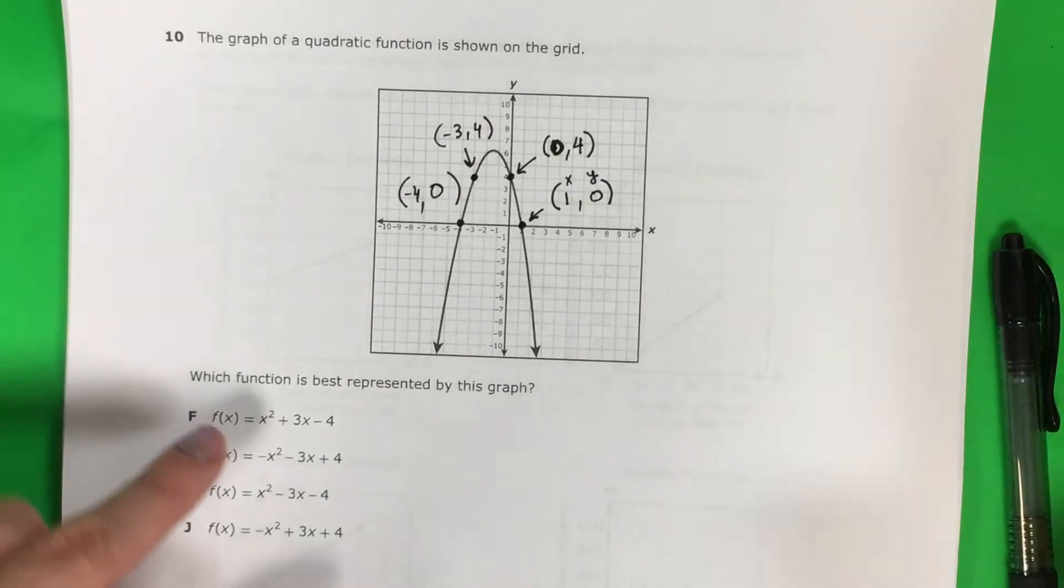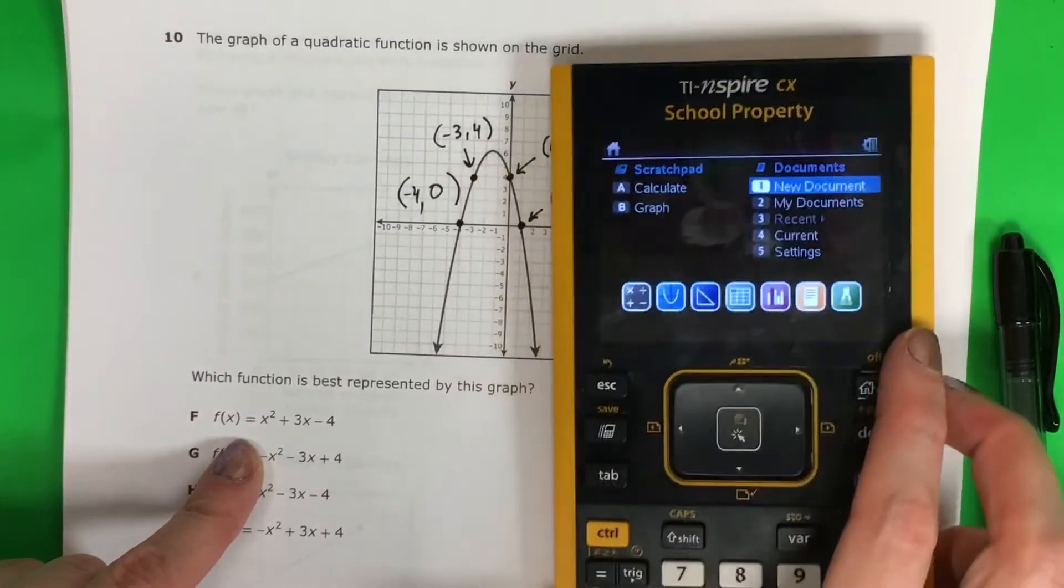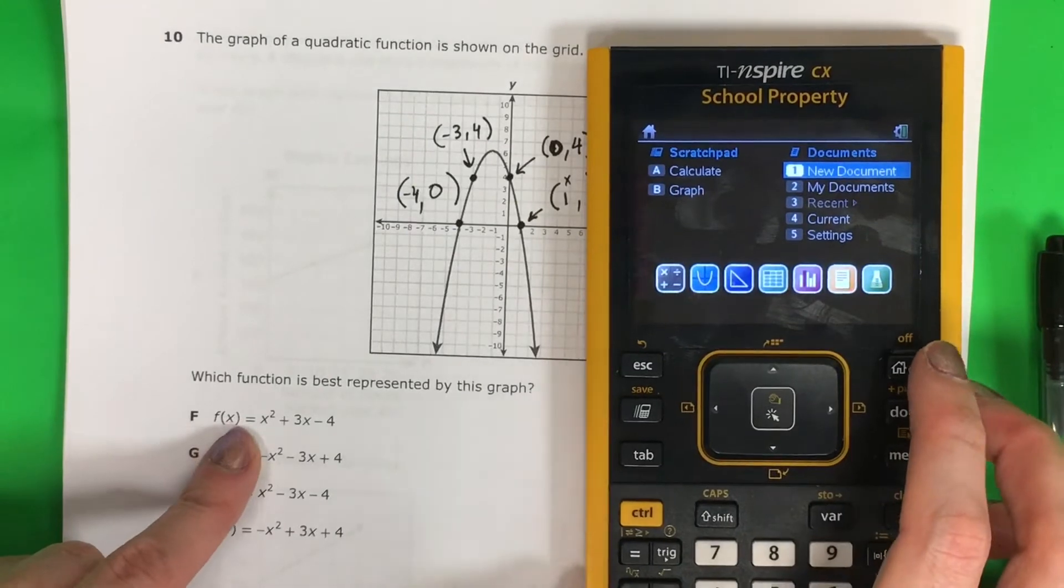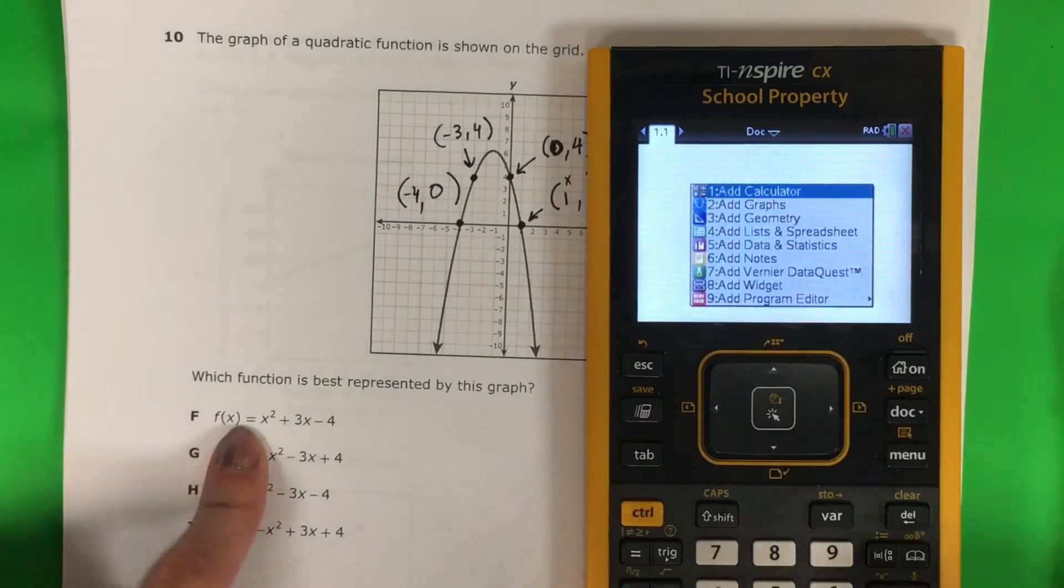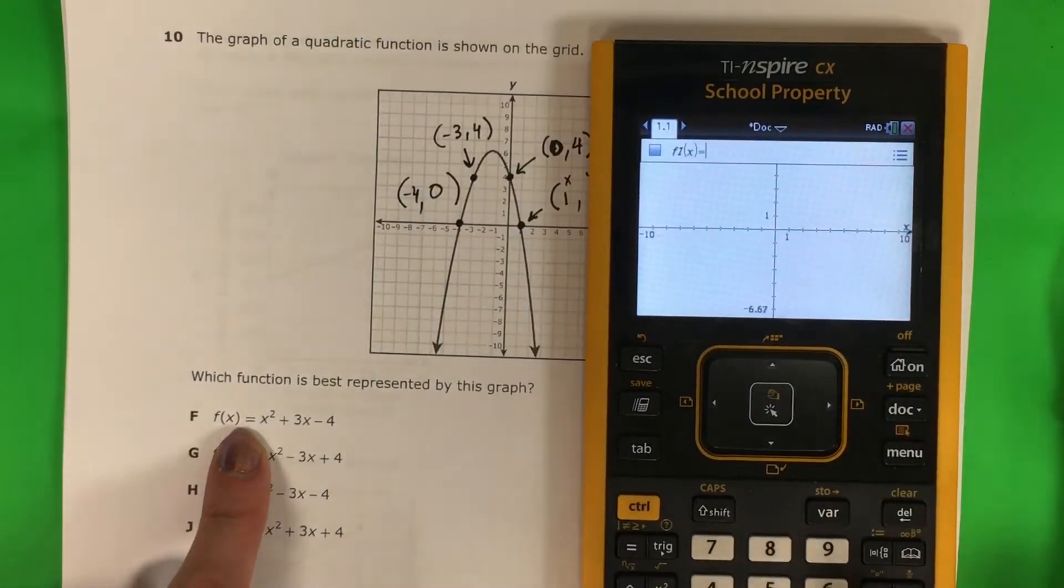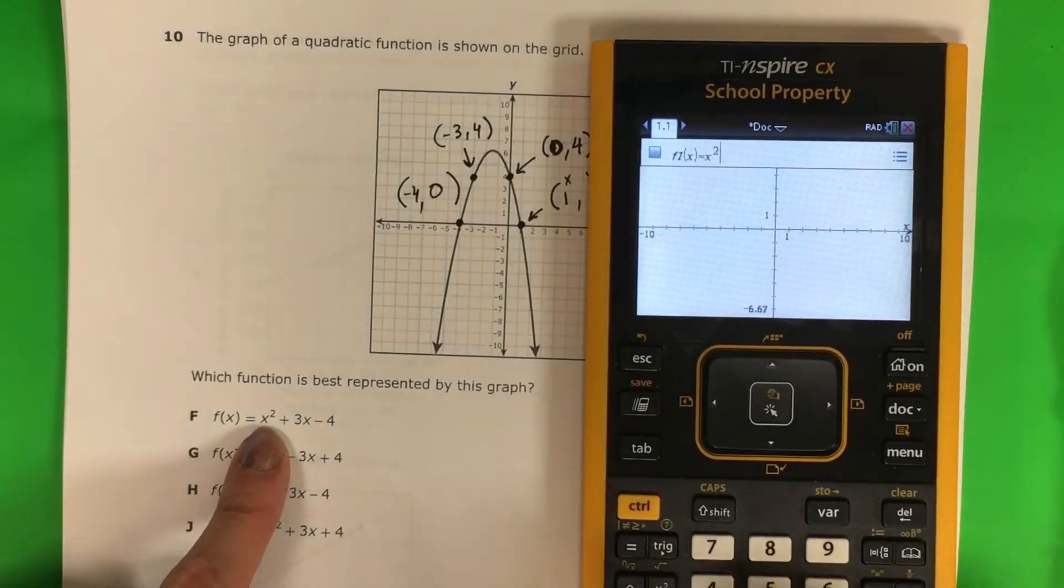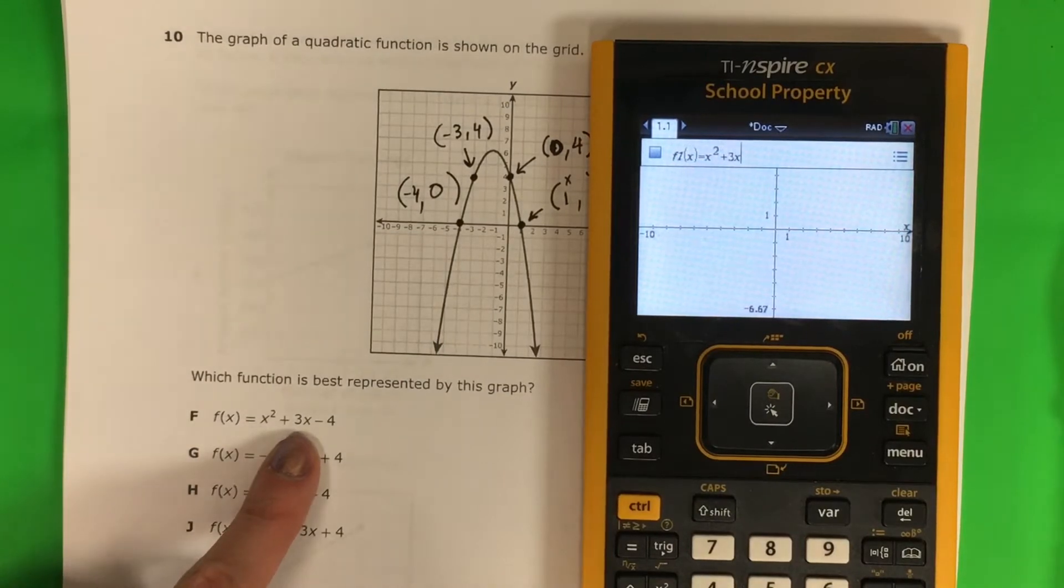So now what I'm going to do is I'm going to go ahead and put this in the calculator, in the graph, one by one. So 1, no, I want the graph, which is the number 2. And I'm going to go ahead and put x squared, plus 3x minus 4, enter.